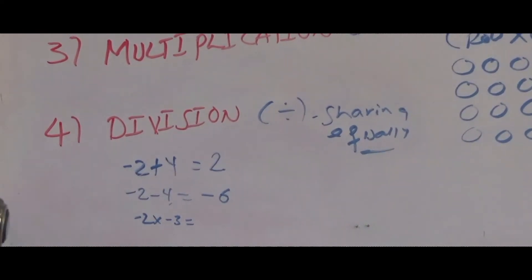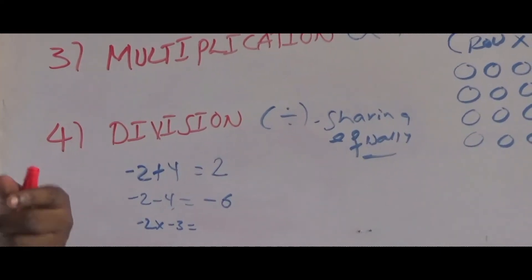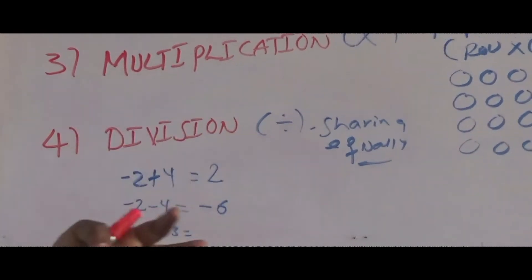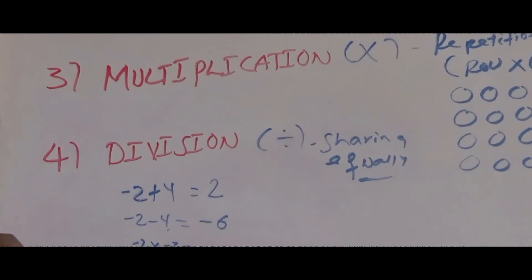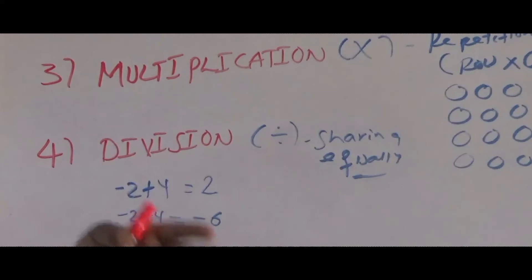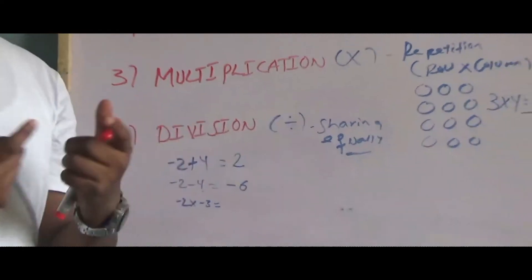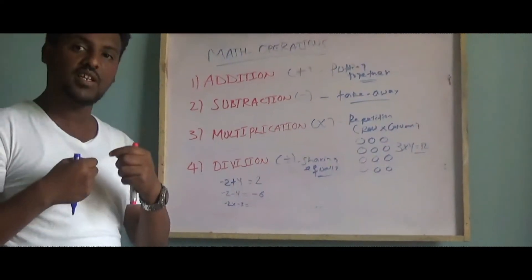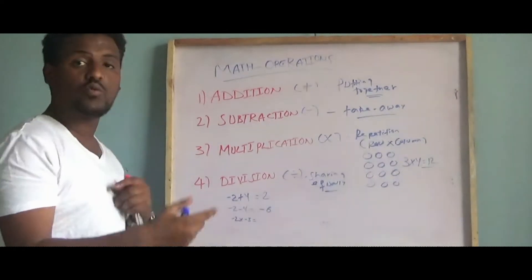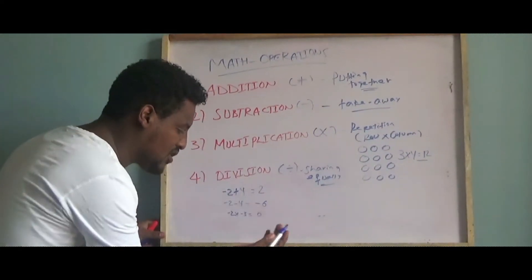Negative times negative is positive. The same rule works for division: negative times negative gives a positive result.